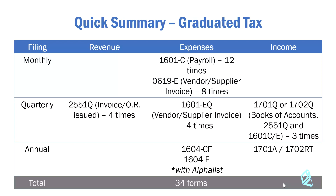For Form 1604E, you also have to attach the alpha list of your payees. If you paid or withheld taxes on rental or professional fees, you have to include the names of the people you paid and withheld taxes from during the year. The annual income tax return is the summarized version of your quarterly income tax return.